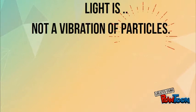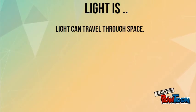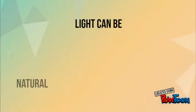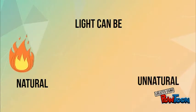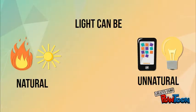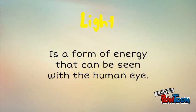Light is not a vibration of particles. Light is given off by an electron, the negative part of an atom. Light can travel through space. Light can be natural or unnatural. Natural light includes things like fire and the sun. Unnatural light includes things like cell phones and electric lights. Light is a form of energy that can be seen with the human eye.